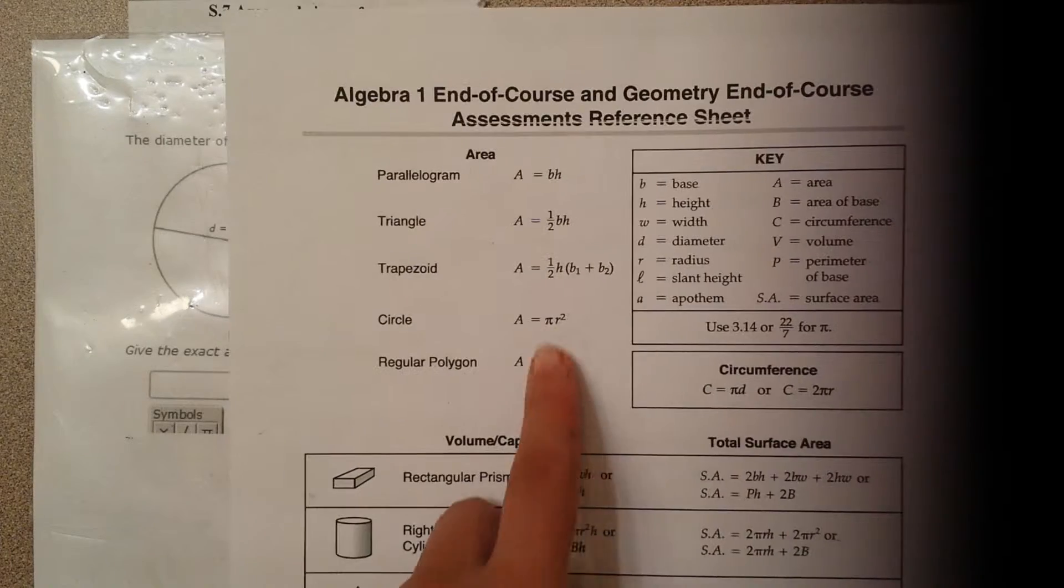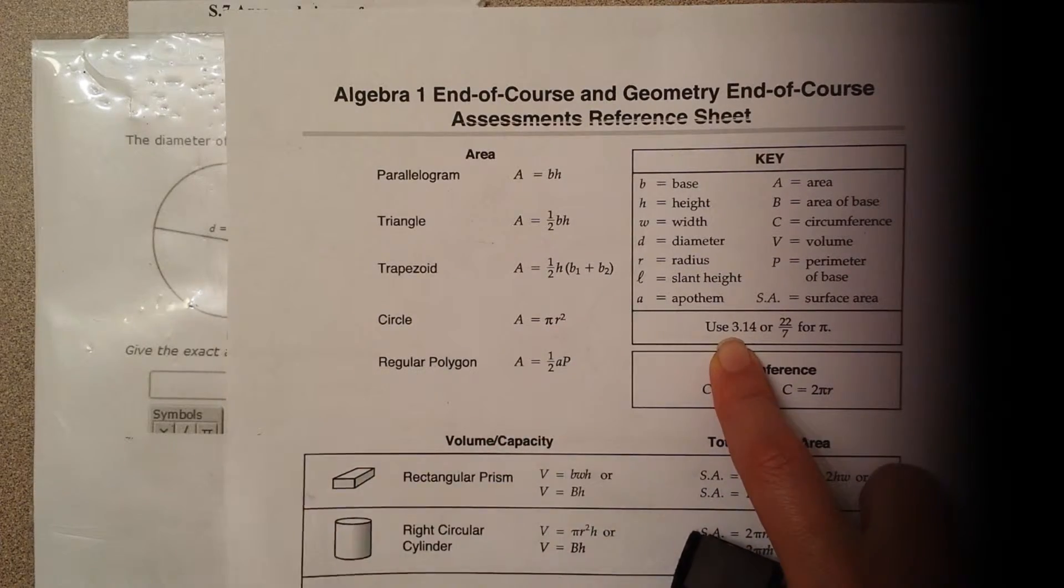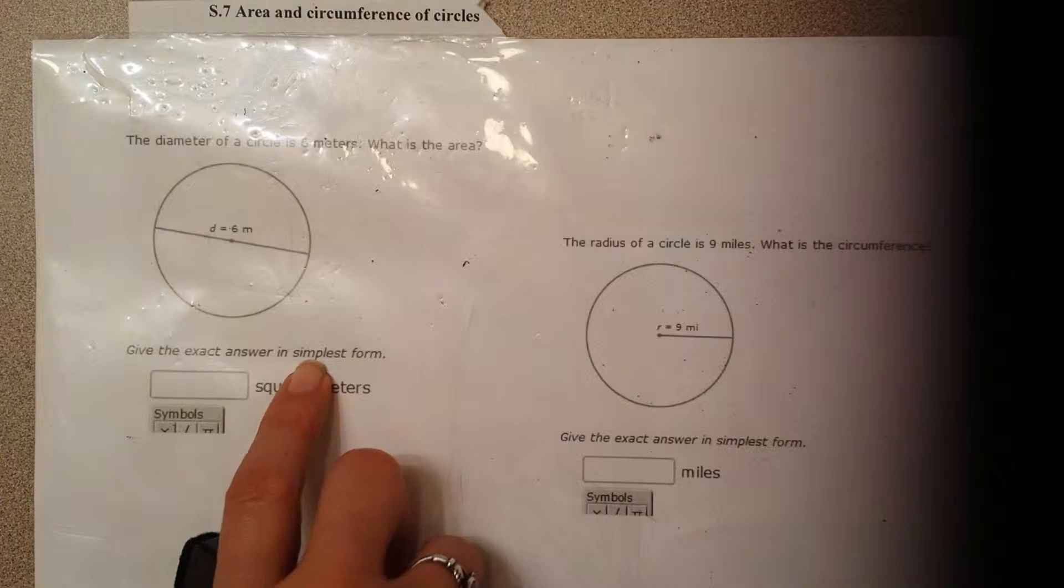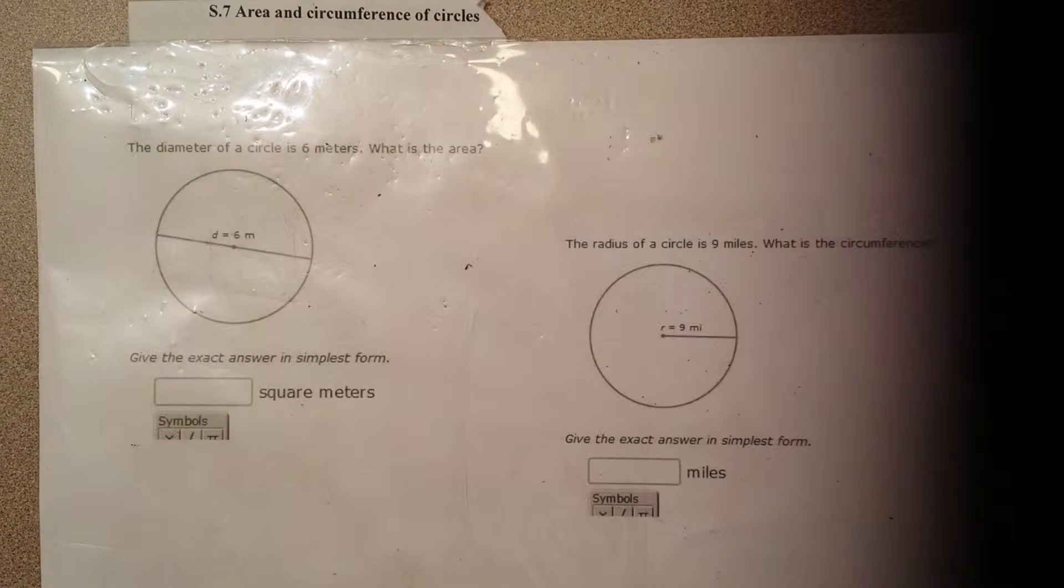So r is the radius. Okay, pi is 3.14. Okay, but this question says leave it an exact answer in simplest form. Okay, so in other words, they don't want to see any decimals.